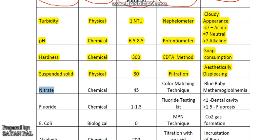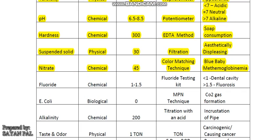Then nitrate. Nitrate is a chemical water quality parameter and its limit is 45 mg per litre. It is measured by color matching technique. If nitrate is more than 45 mg per litre, then blue baby syndrome or methemoglobinemia can result. Remember, nitrite is more dangerous than nitrate.